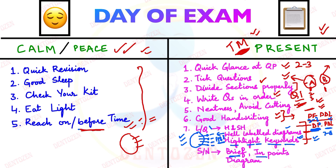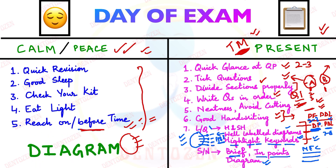For short notes, write in brief because they carry fewer marks — write in points. For example, if asked about the myoepithelial cell, write what it is, where it is found, what its functions are, and then draw a diagram if possible. The two most important things overall are time management and diagrams. More diagrams you draw, more marks you get — well-labeled diagrams express your knowledge, and even if you don't know the text, try to draw a diagram to get marks.